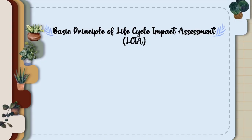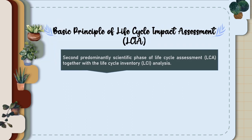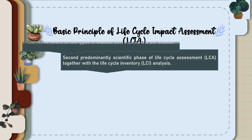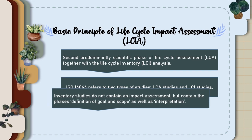Basic Principle of Life Cycle Impact Assessment. LCIA is the second predominantly scientific phase of Life Cycle Assessment, LCA, together with the Life Cycle Inventory, LCI, Analysis. ISO 14,044 refers to two types of studies: LCA studies and LCI studies.